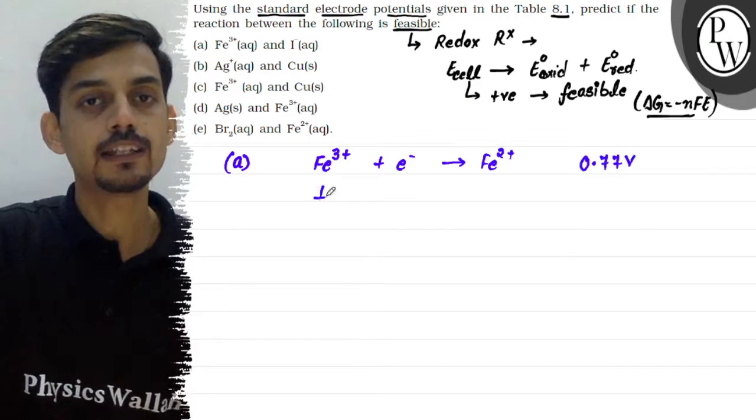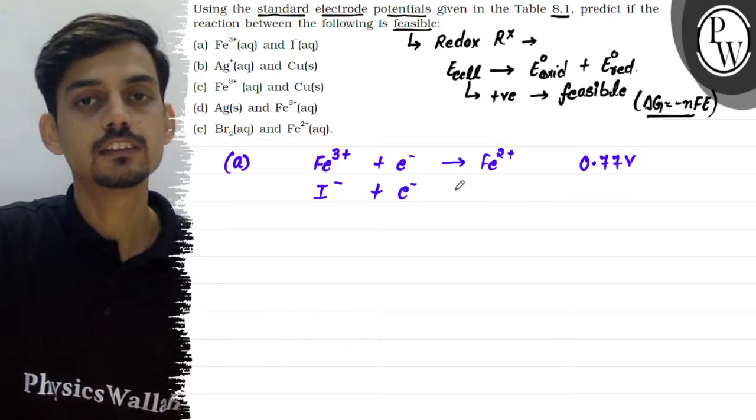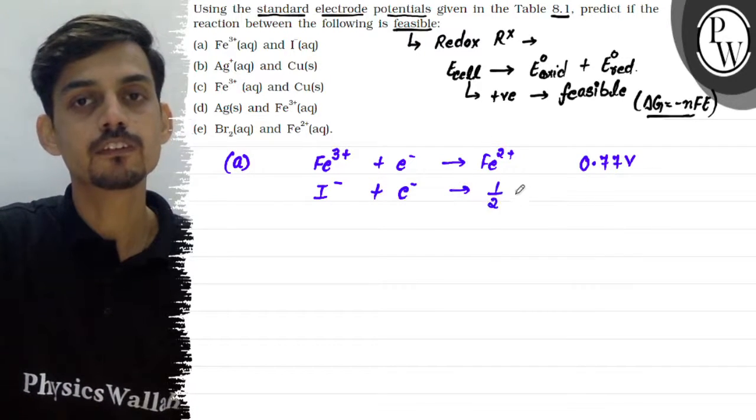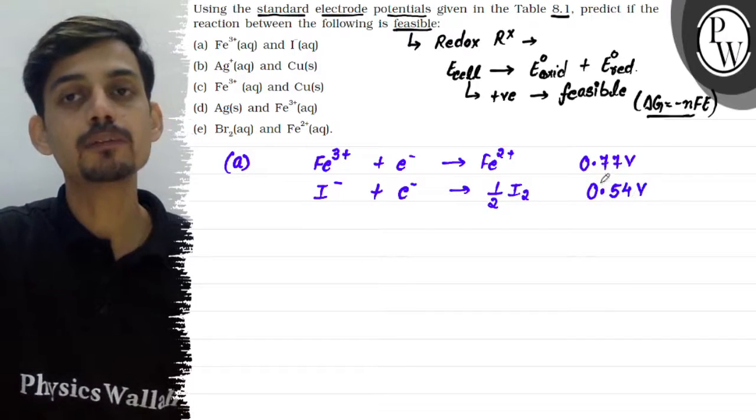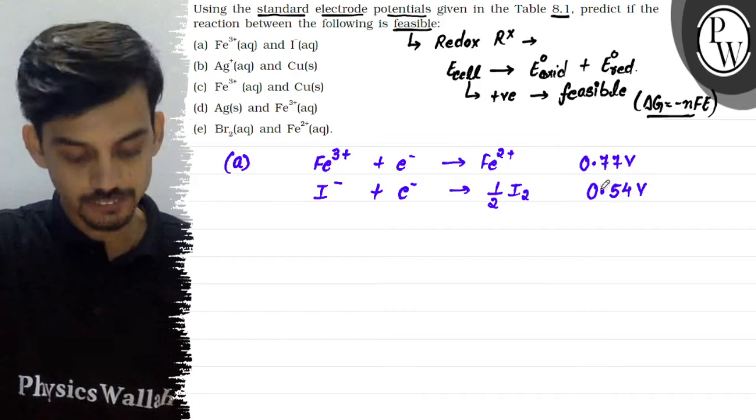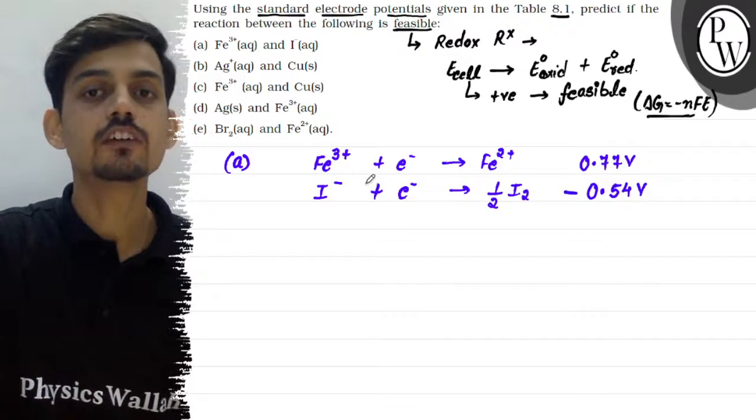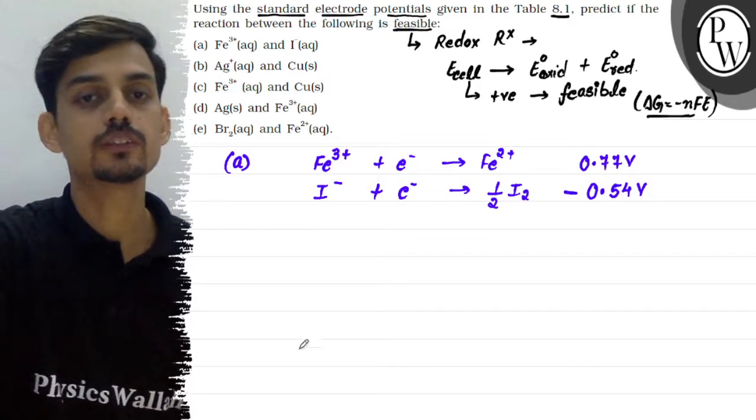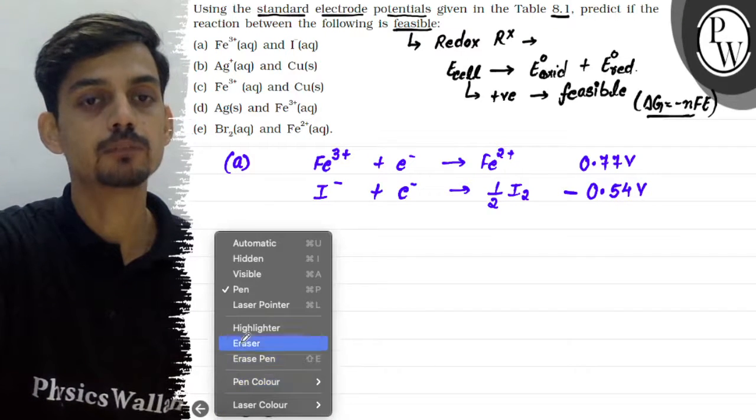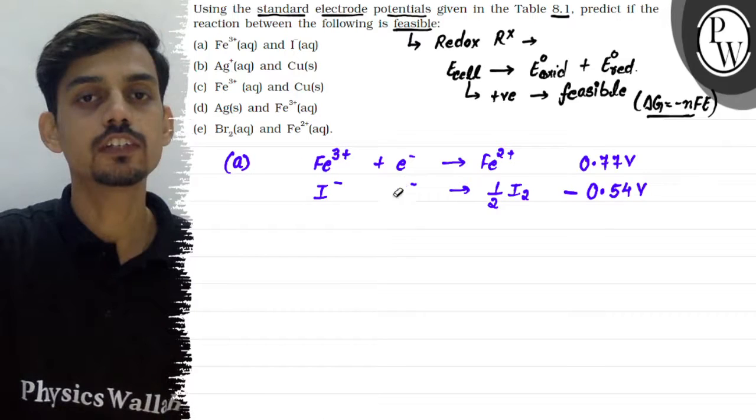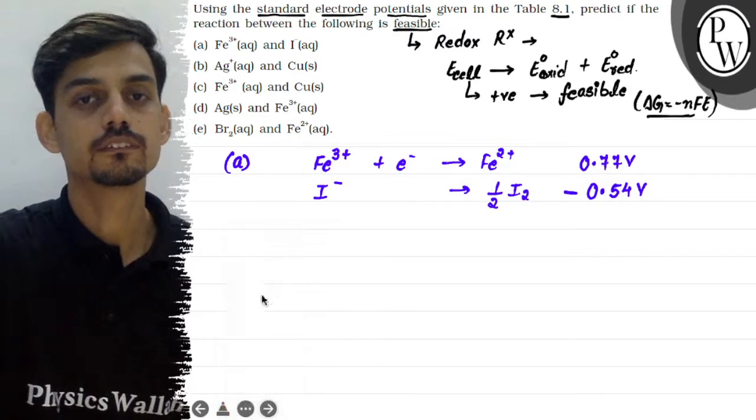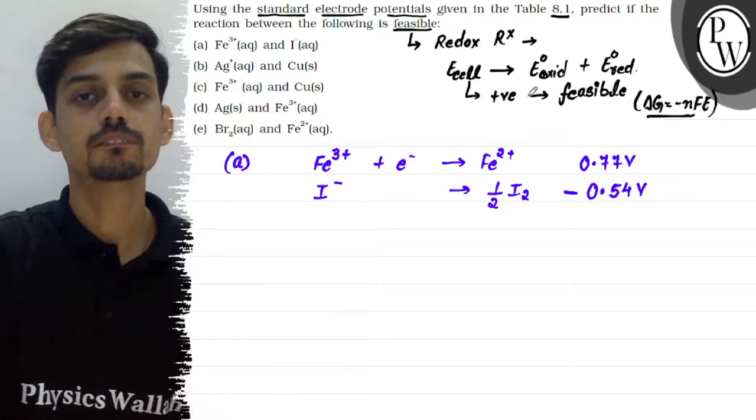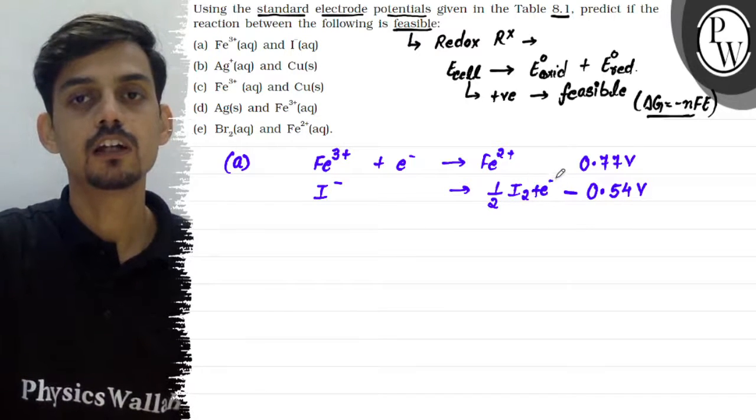And I minus will be oxidized into I2. And this will be our oxidation potential which is given as 0.54 volt. Jo hume table me hai, reduction potential given as 0.54, so this will become negative as this is oxidation potential. Let me correct the position of electron. For oxidation, I minus will lose the electrons.